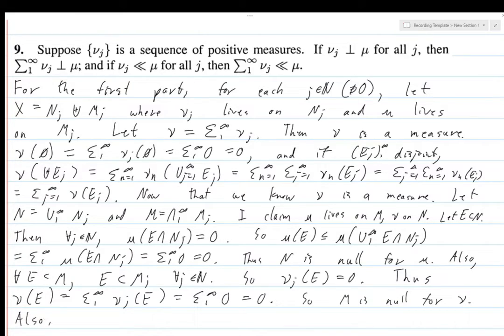So M is null for nu. Also it's pretty clear that N disjoint union M is equal to X, that's just because of how we define them. And hence nu is mutually singular with respect to mu.